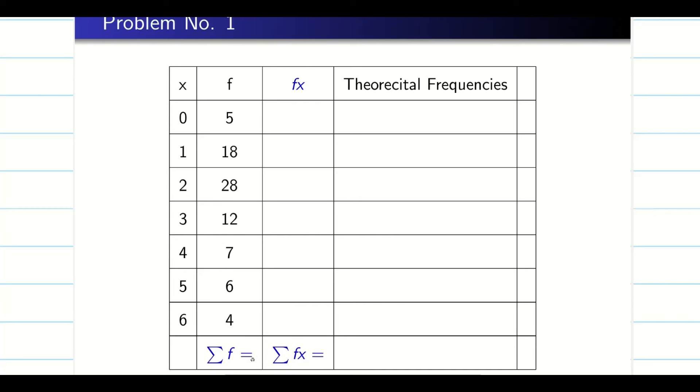Now multiply this F with X and you are going to get the data. Here, theoretical frequency. Theoretical frequency is nothing but my expected frequencies. How to find the expected frequency?